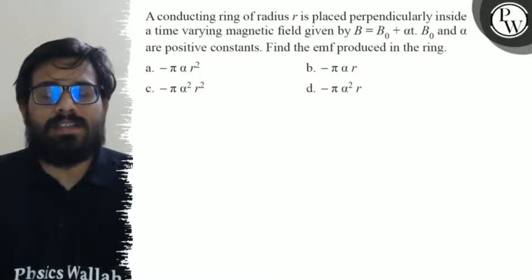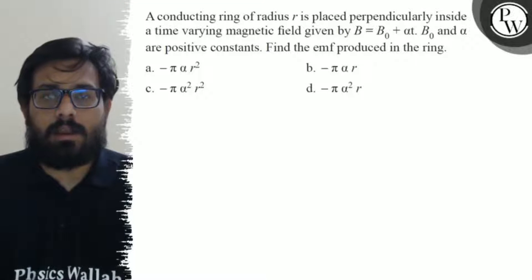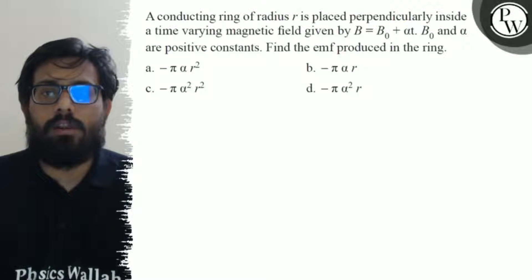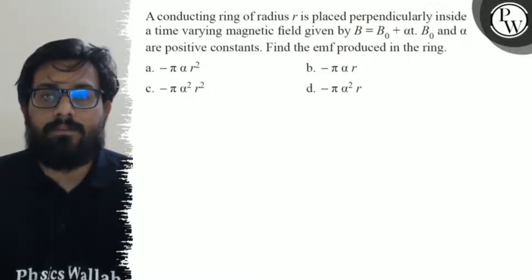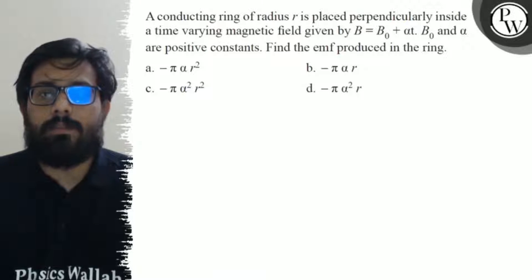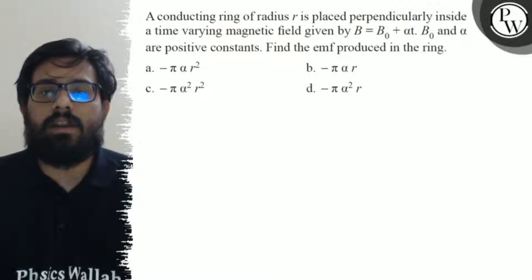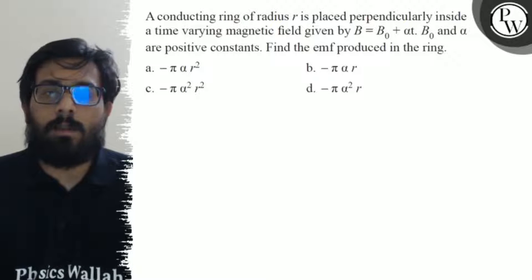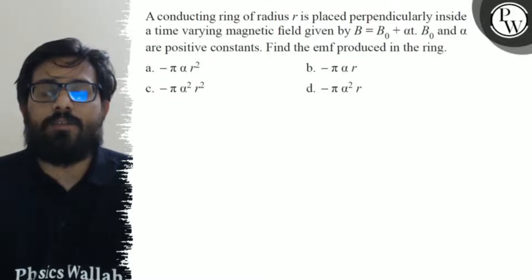Hello, so let's see the question. A conducting ring of radius r is placed perpendicularly inside a time-varying magnetic field given by B = B₀ + αt, where B₀ and α are positive constants. Find the EMF produced in the ring.